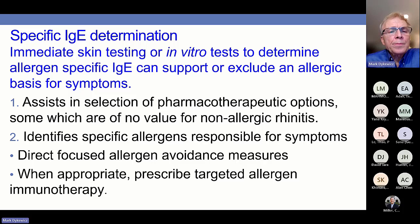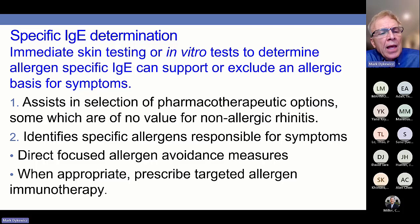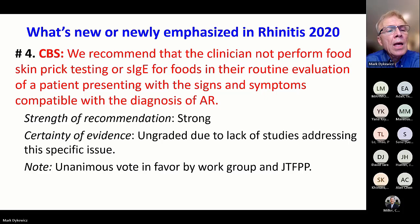Specific IgE determination can be very important and can be performed by immediate-type skin testing or in vitro testing. This allows selection of pharmacotherapeutic options — for non-allergic rhinitis, oral antihistamines of the second generation and leukotriene receptor antagonists would not be effective, altering which medications you work with. Testing identifies specific allergens responsible for symptoms, which helps direct focused allergen avoidance measures and, when appropriate, prescribe targeted allergen immunotherapy.